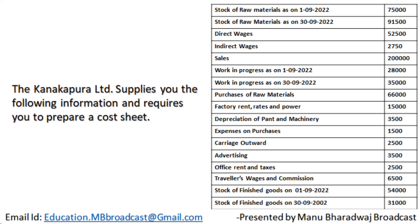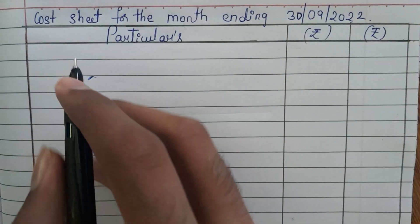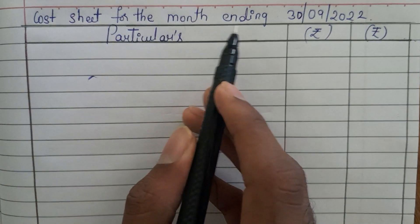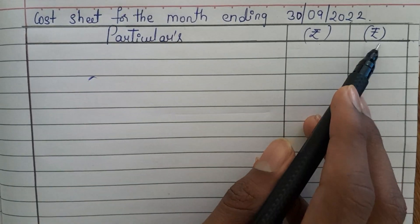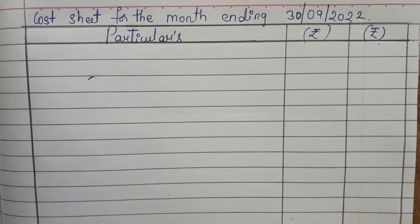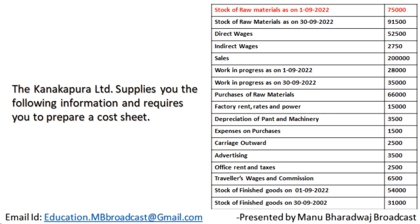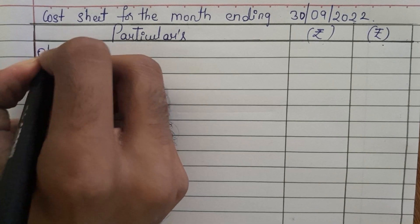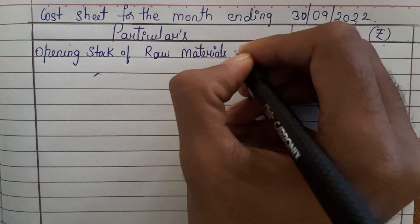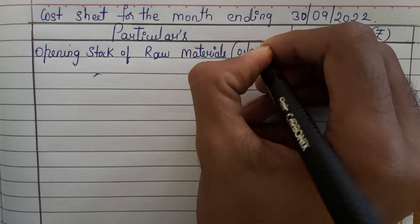The format is like this: you have to write 'Cost Sheet for the month ending 30th September 2022' with particulars and amount columns. Usually we start with materials and direct wages, but this problem is different because they have given the opening stock of raw materials. So first you write opening stock of raw materials, which is the stock as on 1st September 2022.